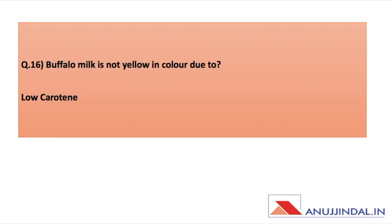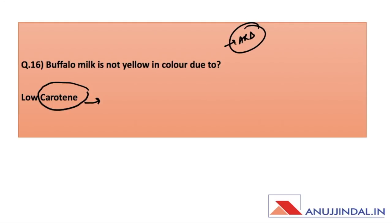Buffalo milk is not yellow in color due to what? In the ARD question series I asked why cow milk is yellow — carotene is the reason behind the yellow color of milk. Buffalo milk lacks carotene, therefore the answer is low carotene.